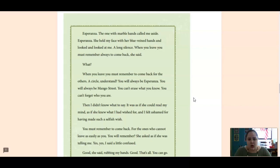Esperanza, the one with marble hands, called me aside. Esperanza. She held my face with her blue-veined hands and looked and looked at me. A long silence. When you leave, you must remember always to come back, she said. What? When you leave, you must remember to come back for the others. A circle, understand? You will always be Esperanza. You will always be Mango Street. You can't erase what you know. You can't forget who you are.